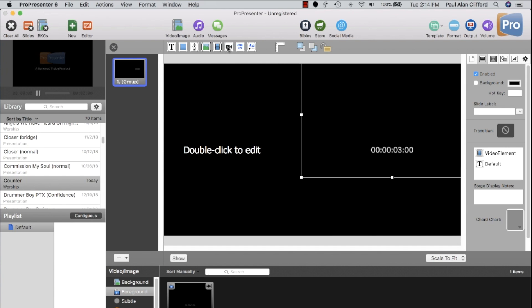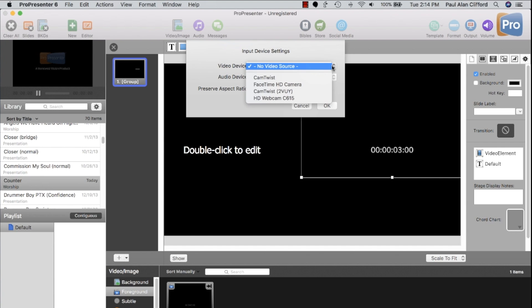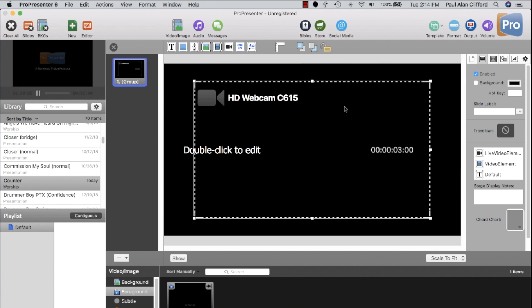Then, I added my Logitech C615 webcam and put it right next to the countdown, aiming it at the counter on the screen. As a result, I had a video of the counter showing right next to the counter itself.